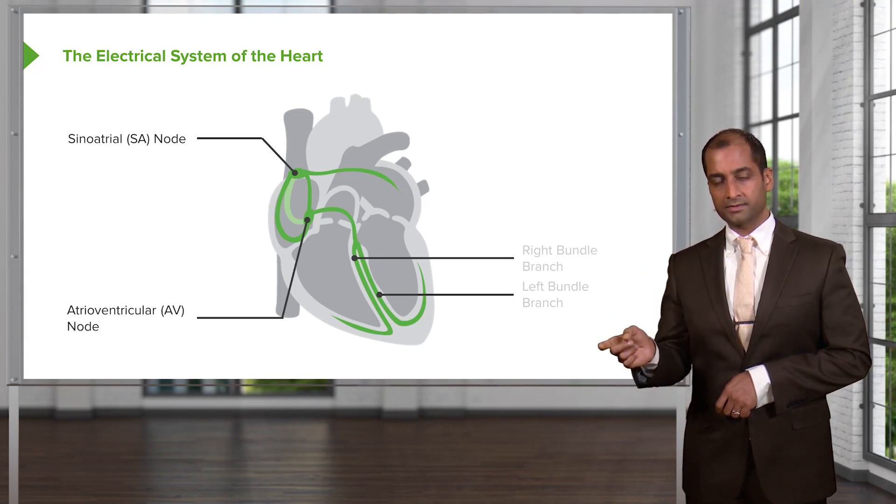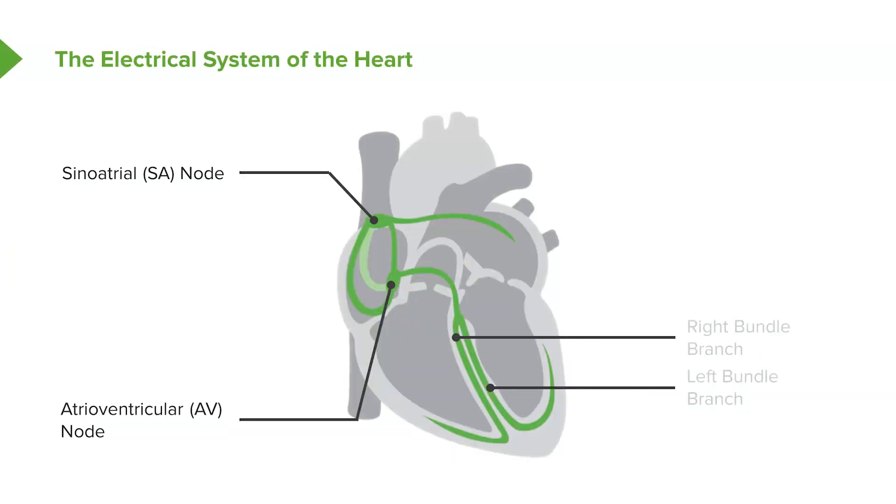I want you to go next to the AV node. With the AV node, the time that it takes to go from SA to AV, what interval is this? PR interval. What time have you memorized? 0.12 to 0.2 seconds. Good.